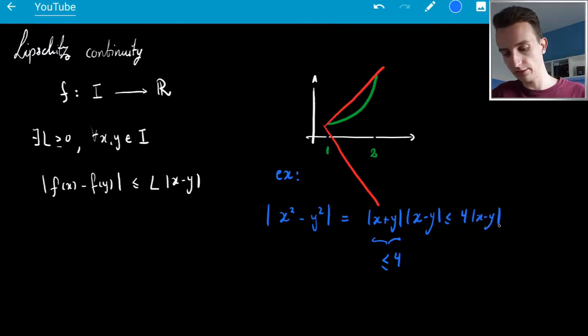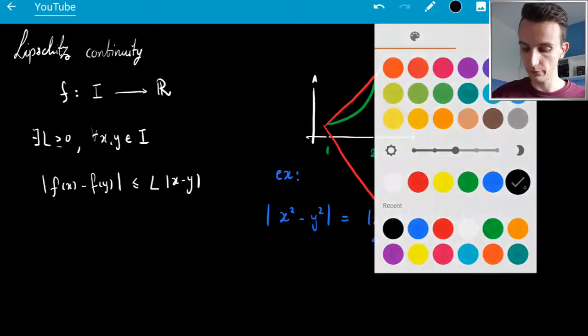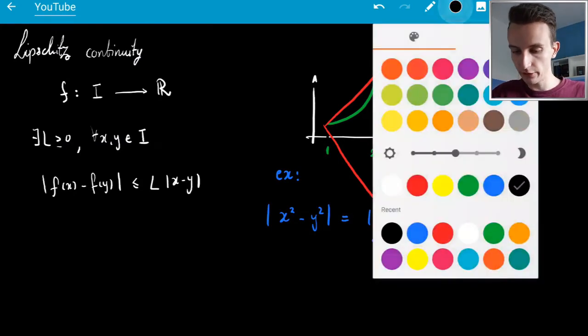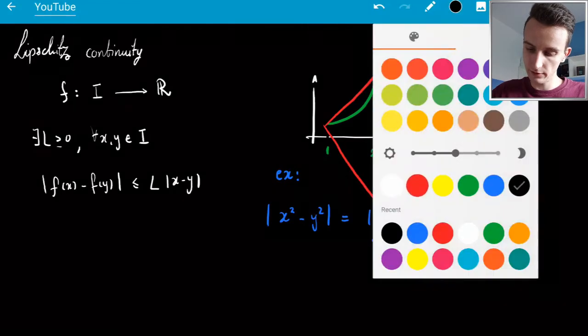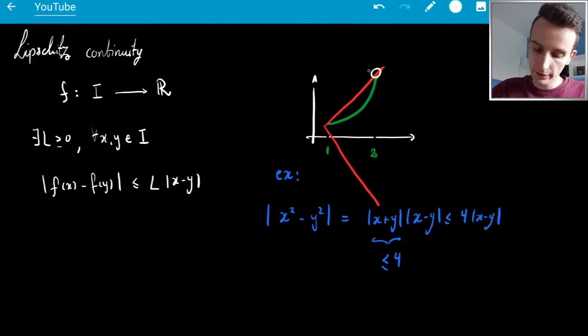so this is less than or equal to 4|x - y|, so our Lipschitz constant is 4, and what do you know, that really does match the way I wrote the cone, doesn't it, because, yes, sorry, I need white, because you see this is 4.